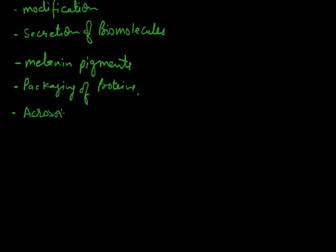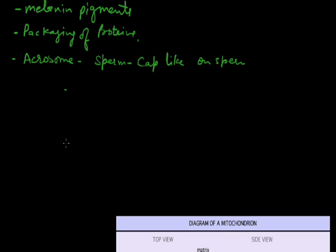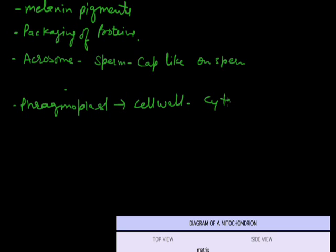Golgi body also helps in the formation of acrosomes in sperms. Acrosomes are the cap-like structures present on sperms, responsible for the penetration of the egg. They contain enzymes called hyaluronidase, which are responsible for the penetration or entry of the sperm inside the egg. The Golgi body and endoplasmic reticulum are responsible for the formation of phragmoplasts in the plant cell. Phragmoplasts are structures responsible for the formation of the cell wall in the plant cell during cytokinesis — the division of cytoplasm during cell division.